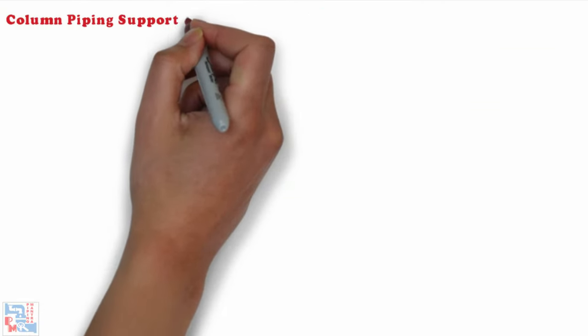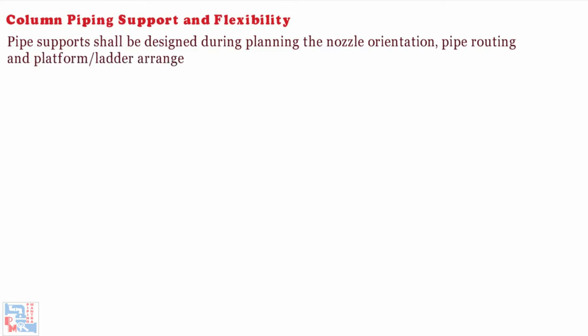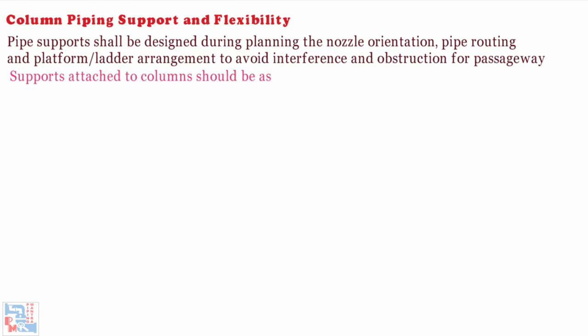After the steps, now comes column piping support and flexibility. First is, pipe support shall be designed during planning the nozzle orientation, pipe routing and platform or ladder arrangement to avoid interference and obstruction for passageway. Loads attached to columns should be as per piping support standard and load information should be sent to stress group for their approval.